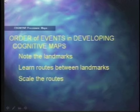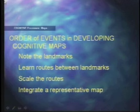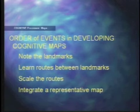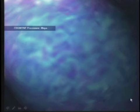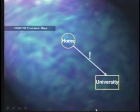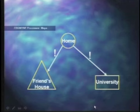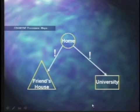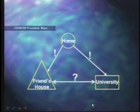Theoretically, that will allow us to integrate a representative map of the environment. When you move to a new apartment, that's essentially the problem you face. You know where home is and where the university is, and you develop a route between them. But then if you go to a friend's house and need to get to the university from there, do you know the space well enough to get from one to the other? That's the ultimate challenge in mapping.